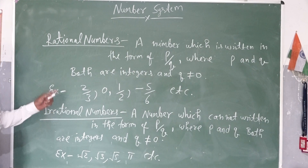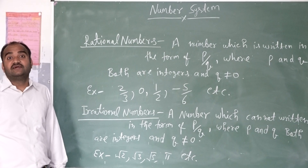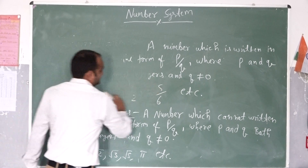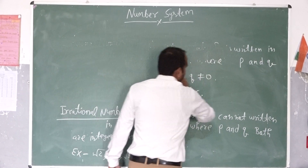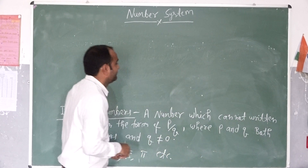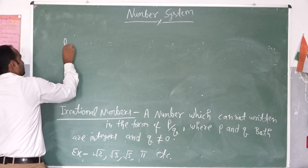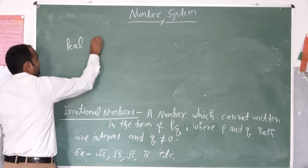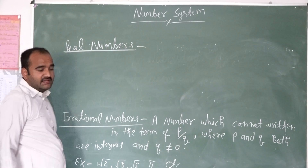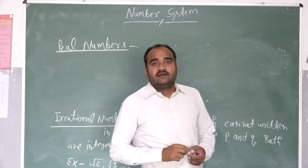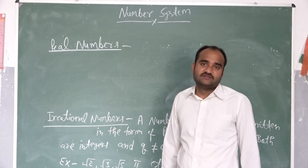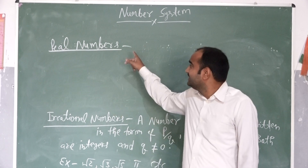After this, what are real numbers? Real numbers. The combination of rational numbers and irrational numbers forms real numbers.